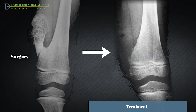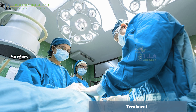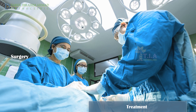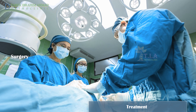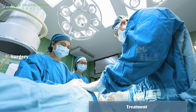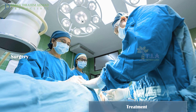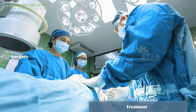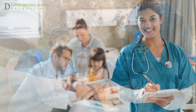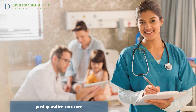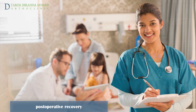Treatment for osteochondroma is generally a simple surgical removal of the lesion from the bone surface. The surgeon will be careful not to harm your child's growth plate to ensure normal physical development after the operation. If the osteochondroma is causing deformity of the adjacent joint — such as knock knee, leg length discrepancy, or other problems — additional procedures to address the deformity may be performed at the time the tumor is removed.